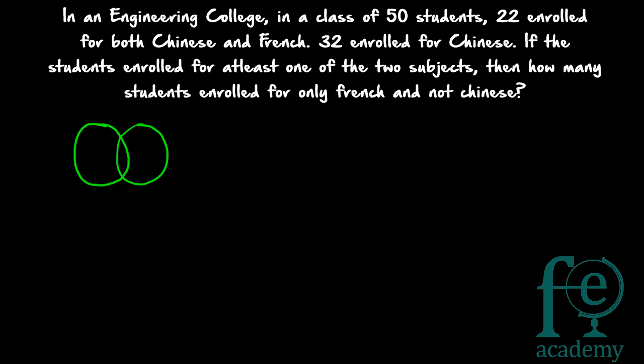There are no students who are neither French nor Chinese, so the two circles alone represent all 50 students. Let one circle represent Chinese and the other represent French. The shared portion equals 22 — those enrolled in both. Since 32 enrolled for Chinese and 22 are in the overlap, remaining 10 study only Chinese.